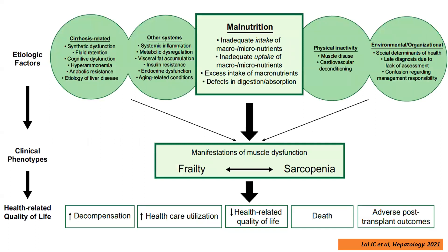What is the clinical significance of malnutrition and how does it impact patient outcomes? If a patient has malnutrition — due to decreased intake, physical inactivity, lack of social support, or other issues — it manifests as frailty or sarcopenia. These patients will have poor prognosis in the form of increased risk of decompensation of cirrhosis, increased healthcare utilization, increased hospitalization, mortality, and poor health-related quality of life.